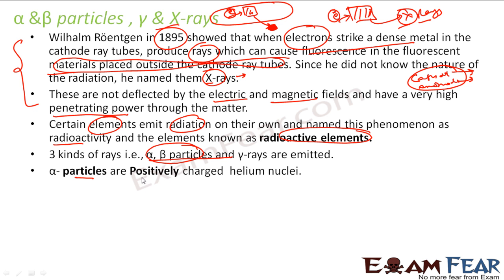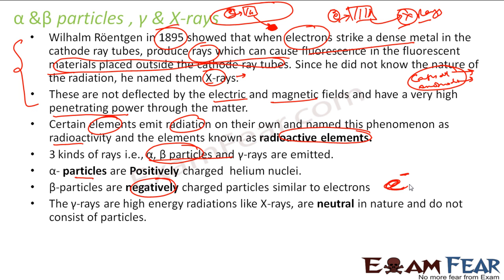Alpha particles are positively charged helium nuclei. Beta particles are negatively charged particles similar to electrons. Gamma rays are not particles - they are very high energy radiations like x-rays. They are neutral, don't have any charge, and don't consist of any particles.